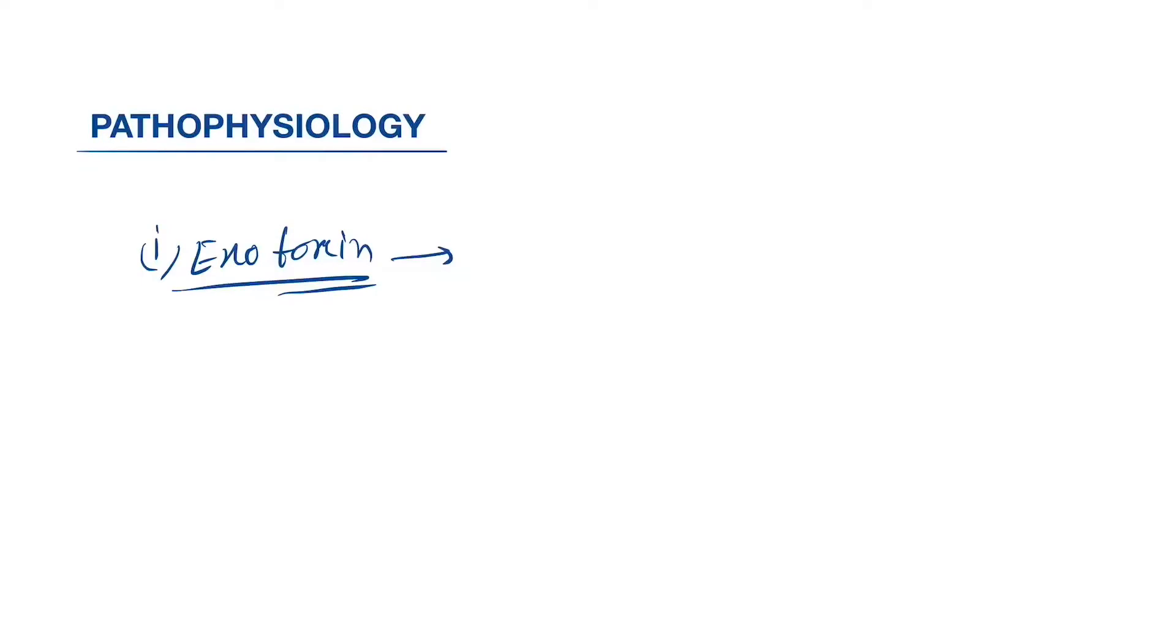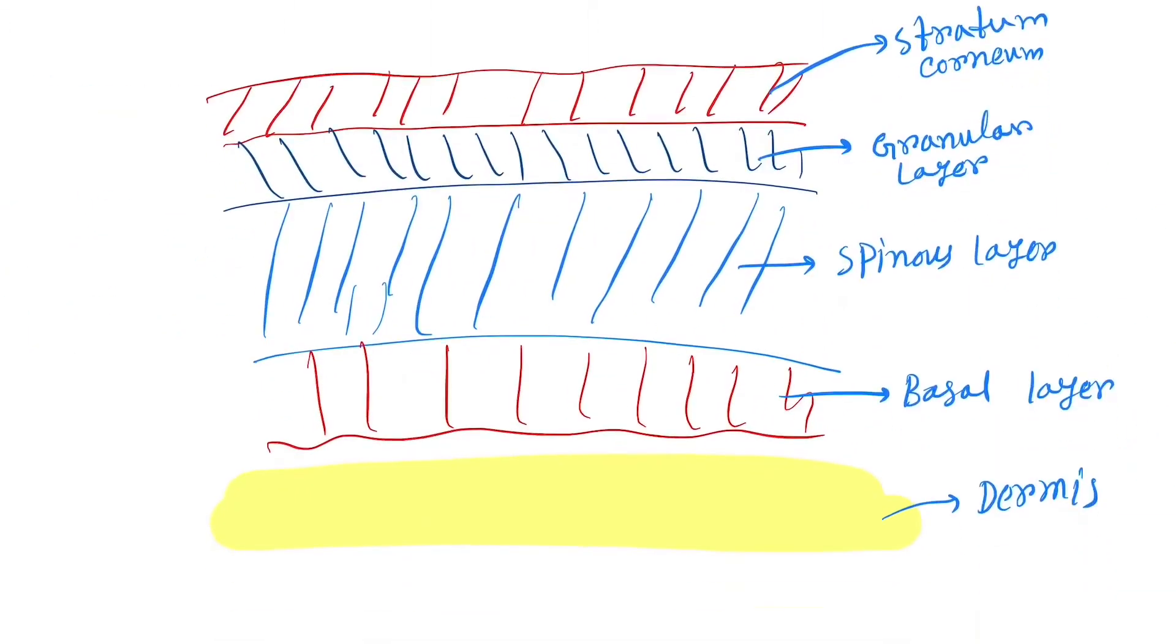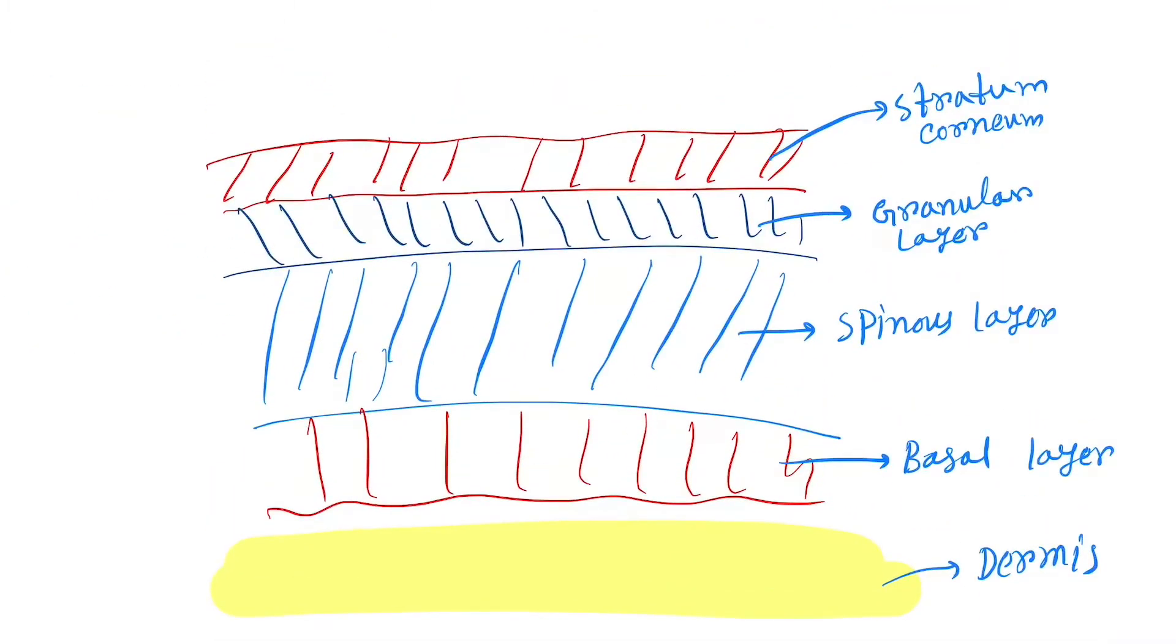Exotoxin causes separation of the epidermis beneath the granular layer. Let's understand this in the picture. You can see the layers of epidermis: first is stratum corneum, next is granular layer, then spinous layer. Here at the granular layer, they cause separation, so this portion of the epidermis gets separated.